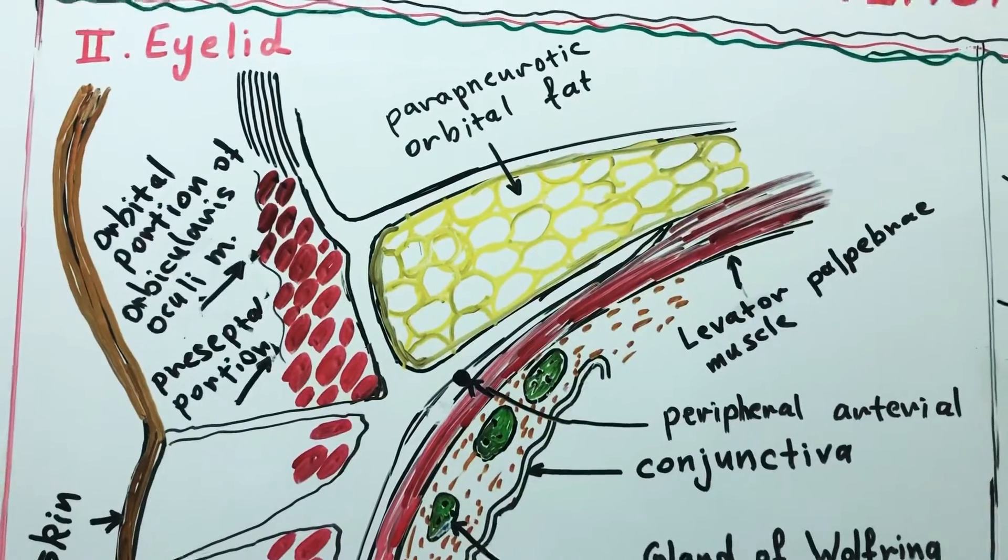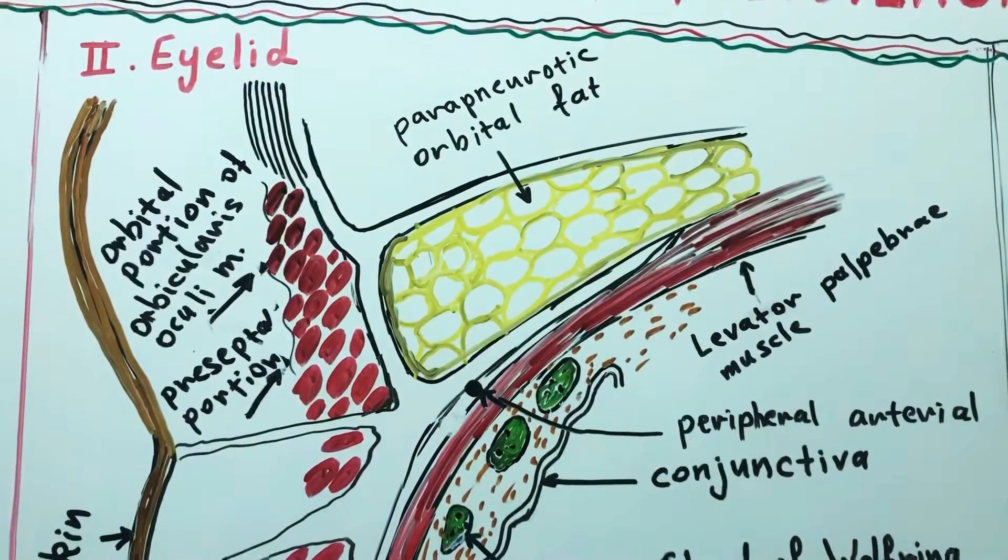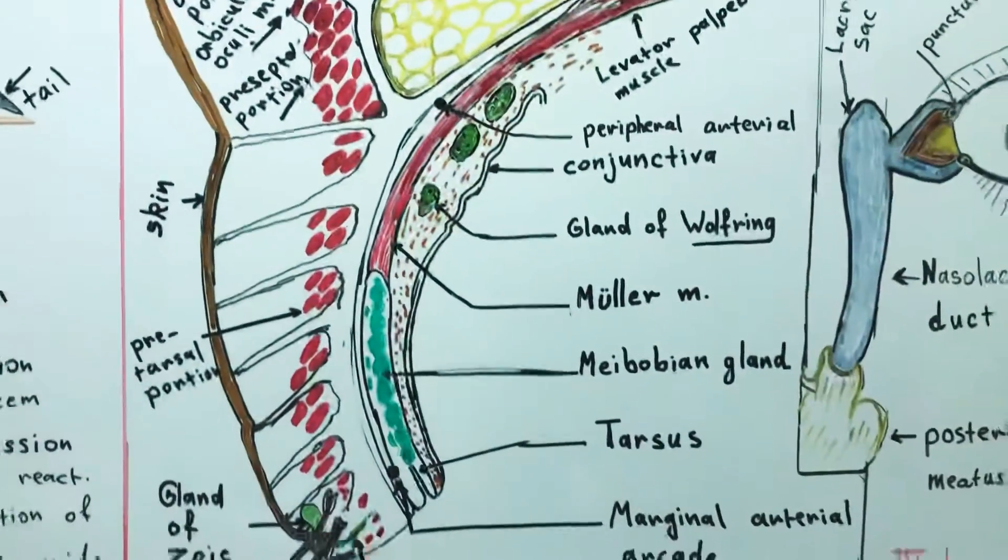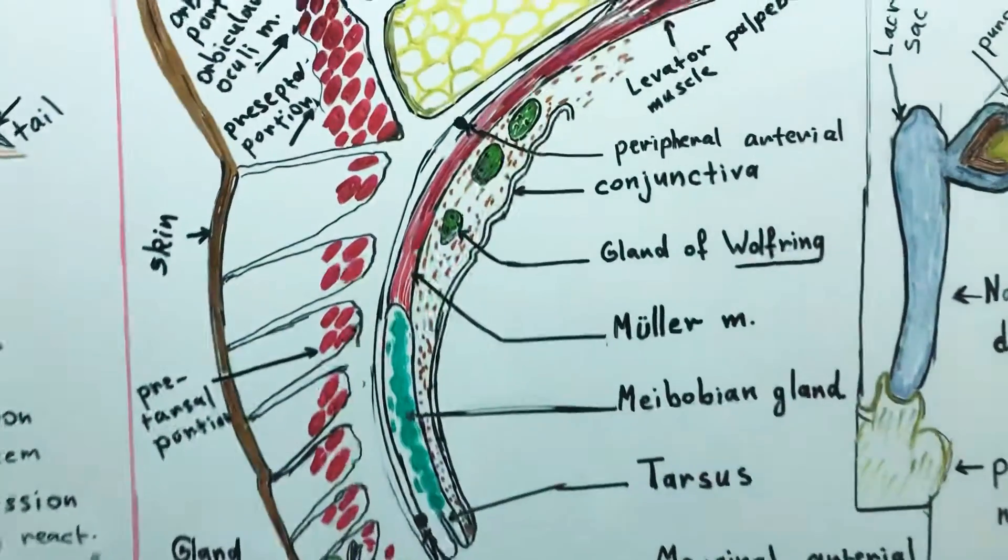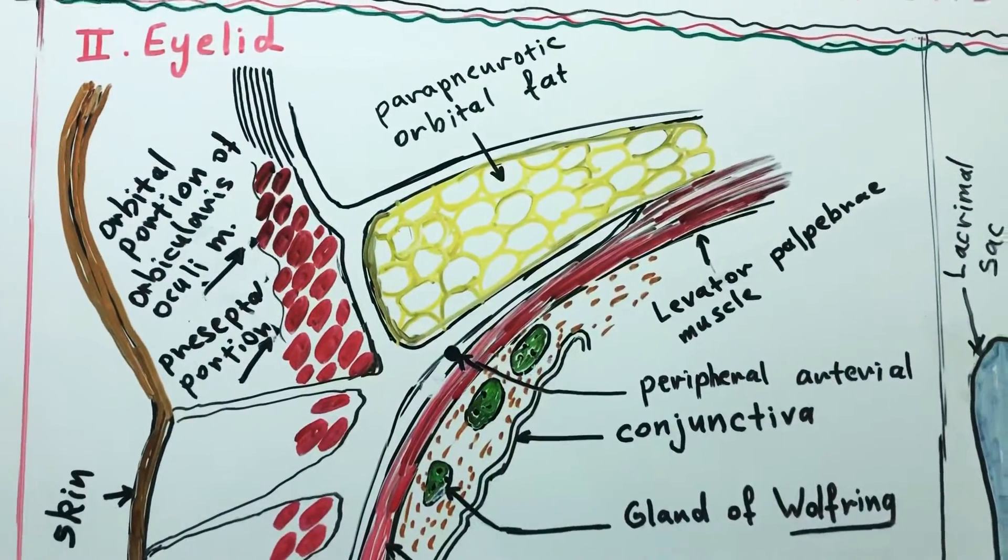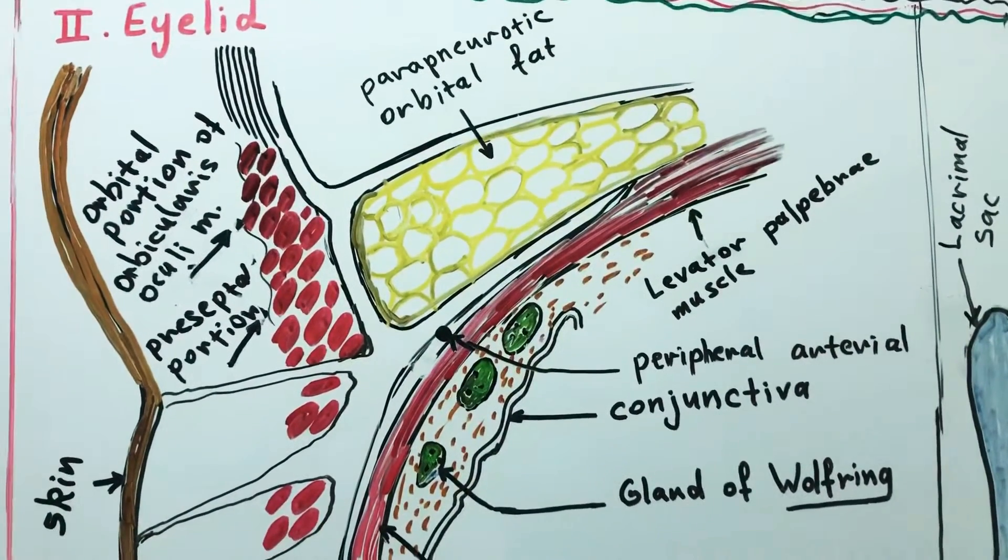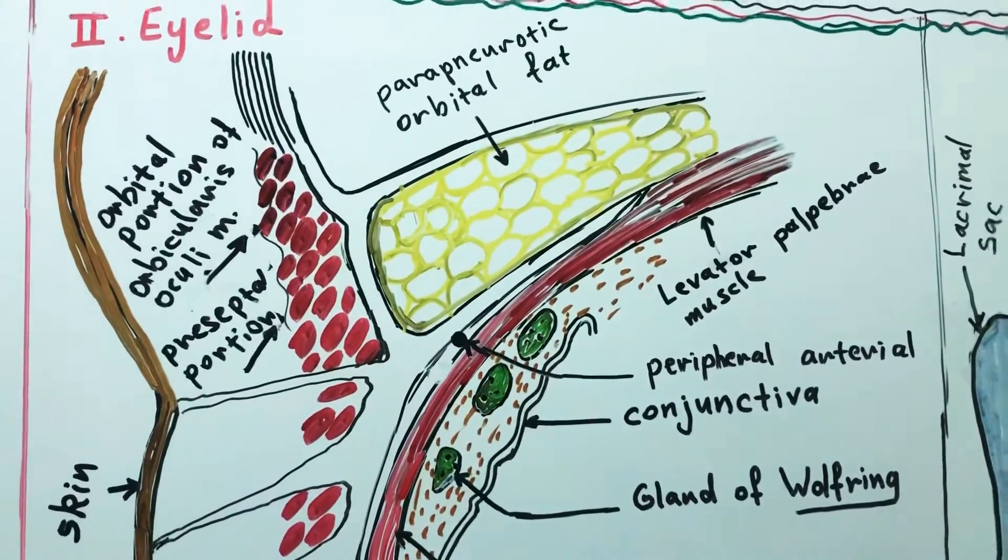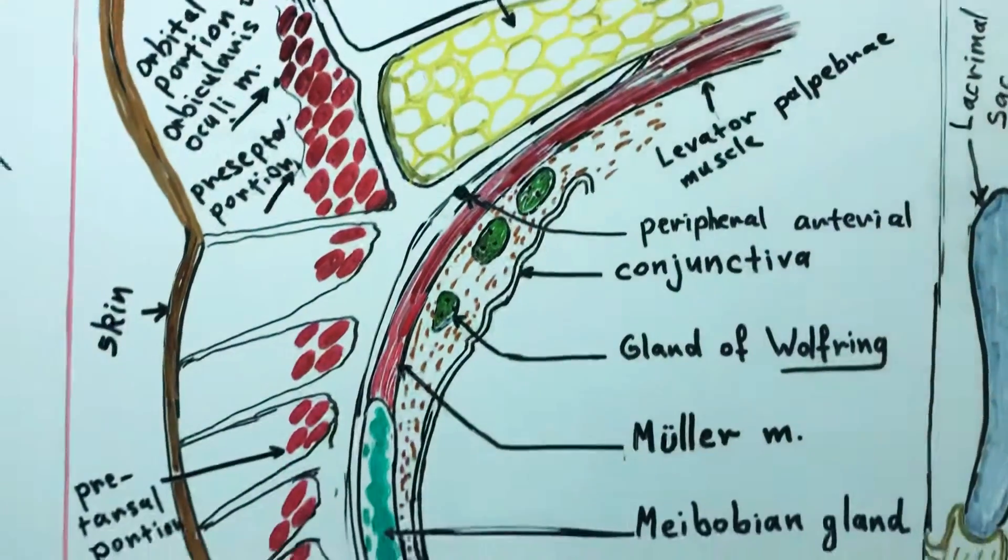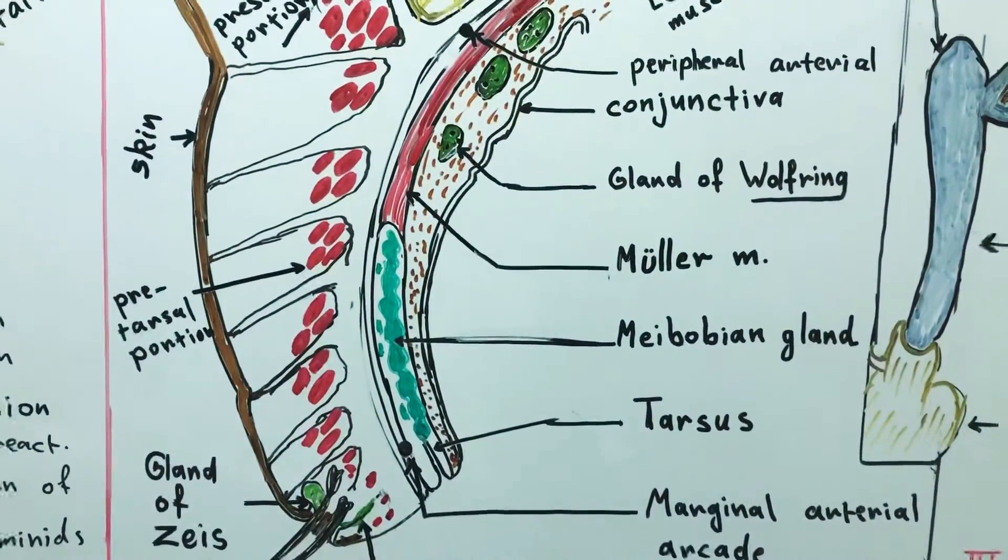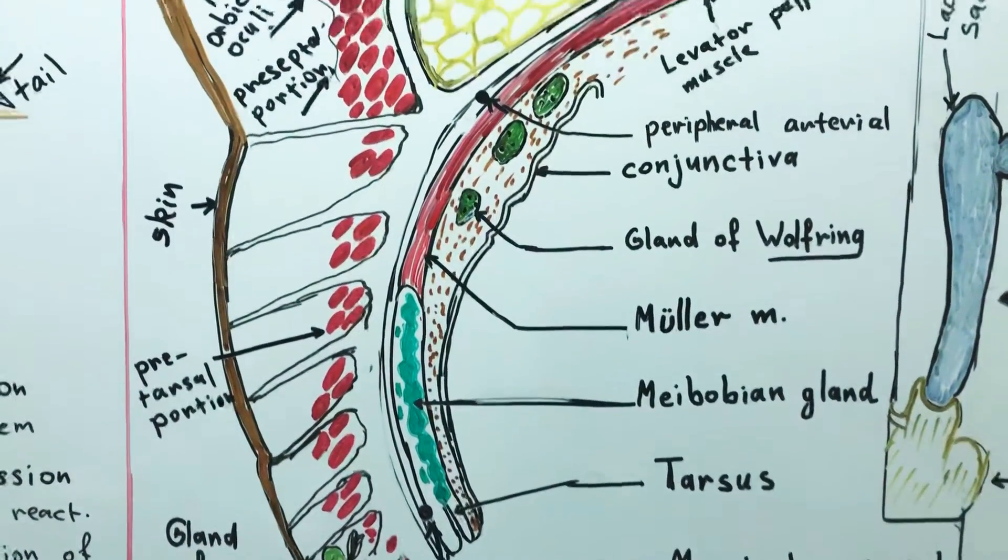Another structure of the ocular adnexa is the eyelid. Eyelid is a skin that covers the eye, protecting it and distributing the tears to prevent eye from dryness, especially during sleep. In addition to distribution tears to nourish and moisture the corneal epithelium.